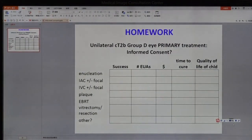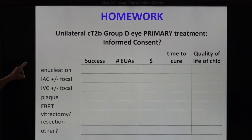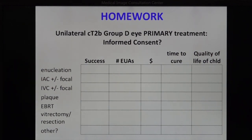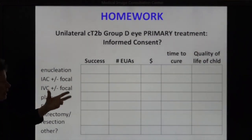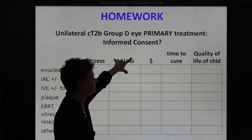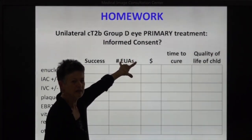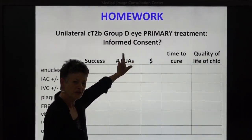So this is the homework. I can pick as an example a unilateral CTTV group D retinoblastoma for the primary treatment. What do you need to tell the parents in order to make their consent for the treatment of that child truly informed?